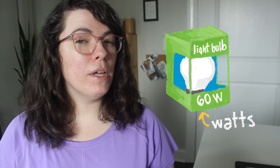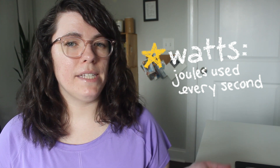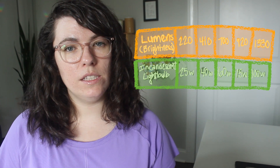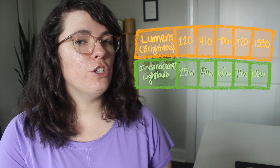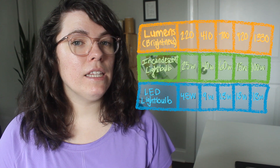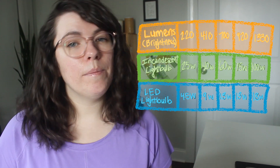Another familiar unit of power is watts. When you buy a light bulb, the box will describe the amount of watts needed to power it. Watts describes how many joules are used every second. Traditional incandescent light bulbs typically use between 25 and 100 watts, and a brighter bulb requires more watts. However, LED light bulbs require far less watts to achieve the same brightness — typically between 2 and 18 watts — which is why switching from incandescents to LEDs can reduce your energy usage.